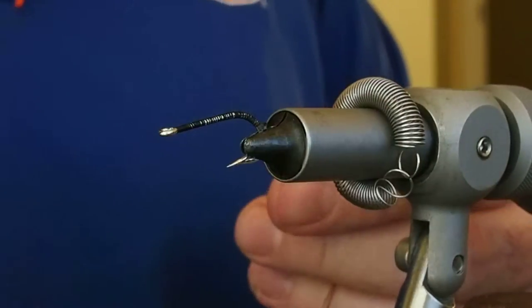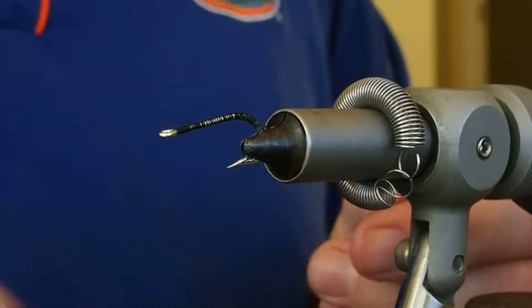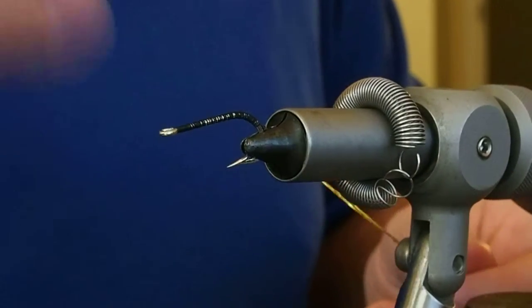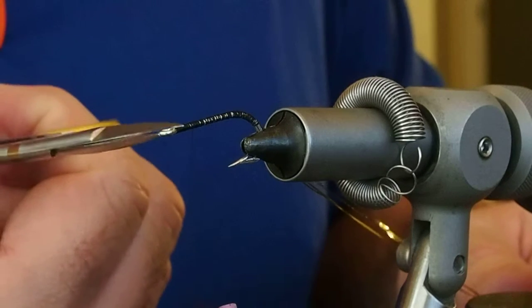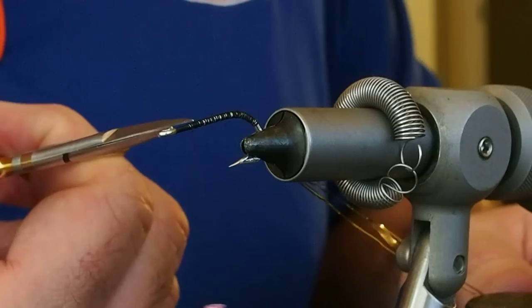Capture that about halfway down the bend. We can then advance our thread back up just about to the eye. Leave about an eye's length distance between your thread and the eye.